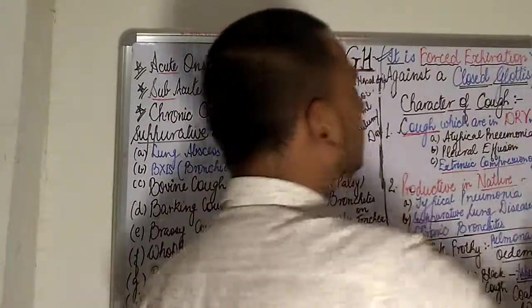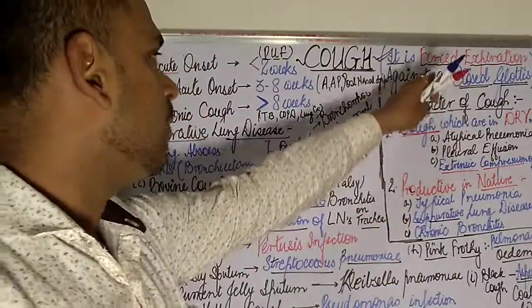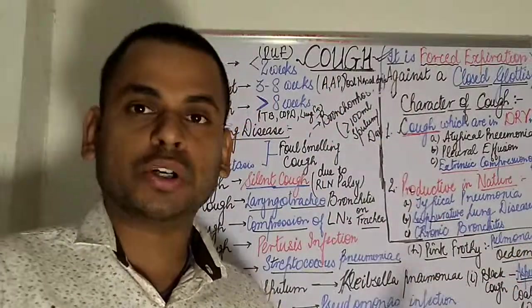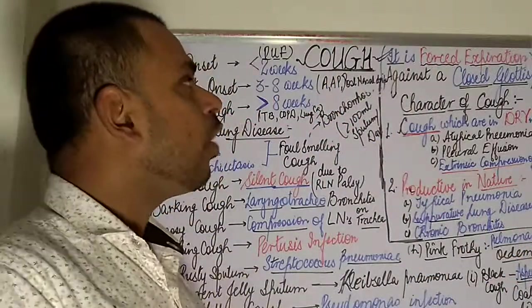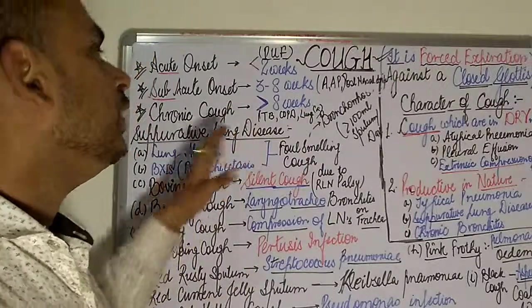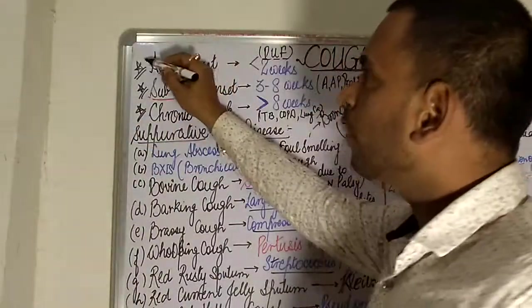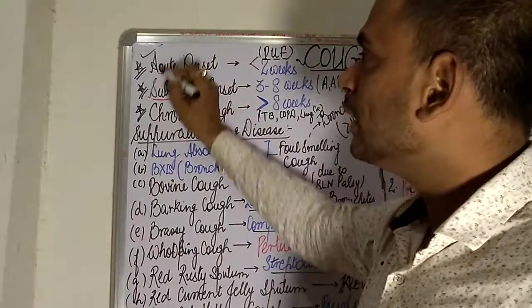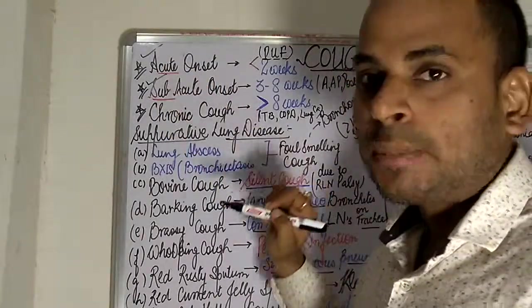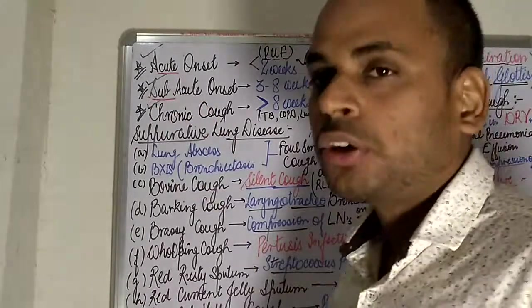On the basis of duration, cough can be broadly divided into three categories: acute onset, subacute onset, and chronic cough.